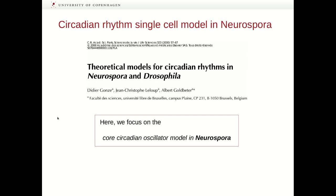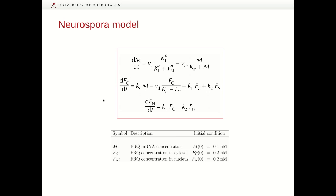For the sake of simplicity, we will focus here on the core circadian oscillator model in a fungus called Neurospora, and this model has been taken from a paper called Theoretical Models for Circadian Rhythms in Neurospora and Drosophila. The Neurospora model consists of a set of three ordinary differential equations, where M is a variable describing the mRNA of the FRQ protein in the nucleus or cytosol. The FC variable describes the FRQ concentration in the cytosol, and the FN variable describes the FRQ concentration in the nucleus.